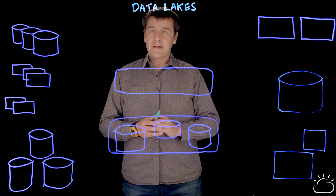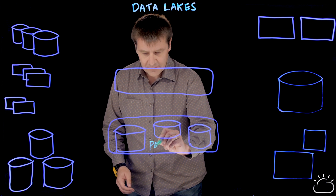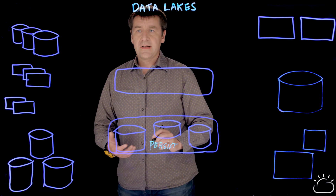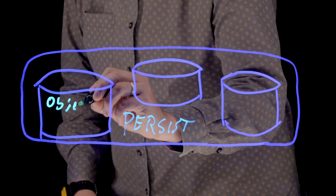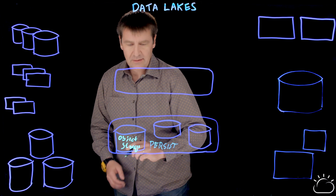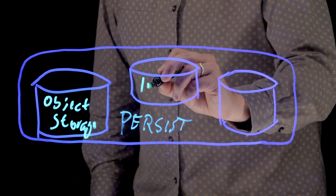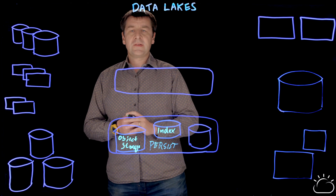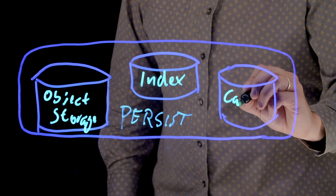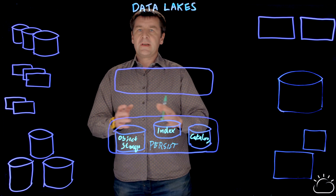The center of a data lake in the cloud is the data persistency itself. The data in the cloud data lake is persisted in object storage. We also persist information about the data: information about indexes, so we can make use of this data efficiently, and we also store metadata about the data in a catalog. This is the persistency layer of the data lake.